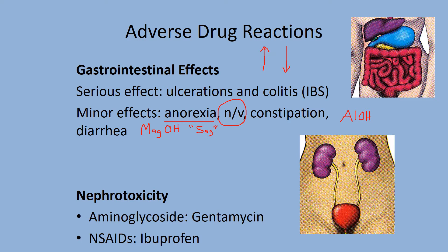Nephrotoxicity means toxic to the kidneys. Aminoglycosides, a type of antibiotic — gentamicin is a representative — are damaging to the kidneys. For military personnel, vitamin M, or Motrin, is also toxic to the kidneys. If you're starting to get dark, cola-colored urine, it may have already done damage. For NSAIDs like ibuprofen, limit use to just a few weeks — chronic use may lead to kidney failure.